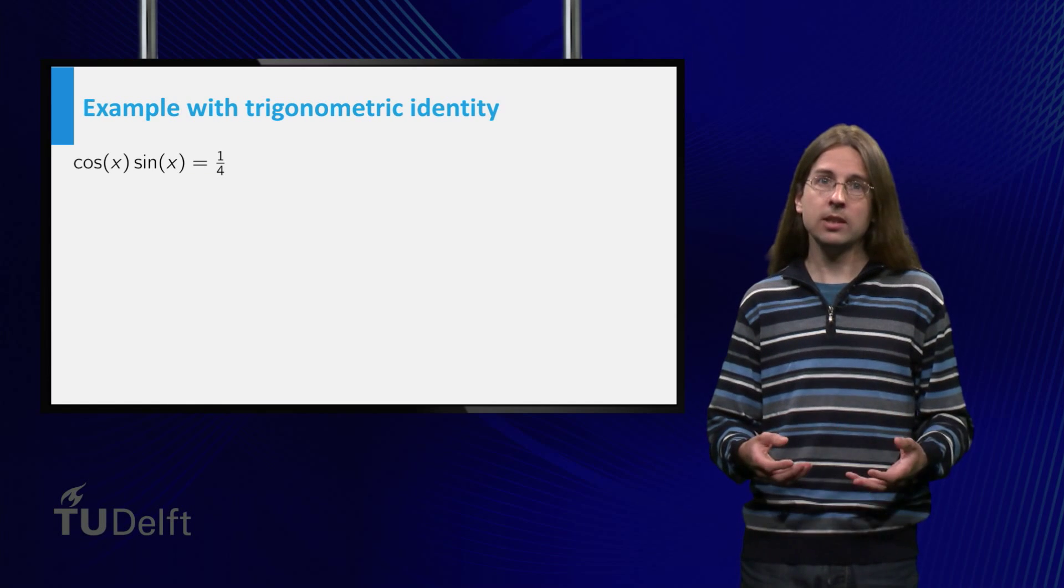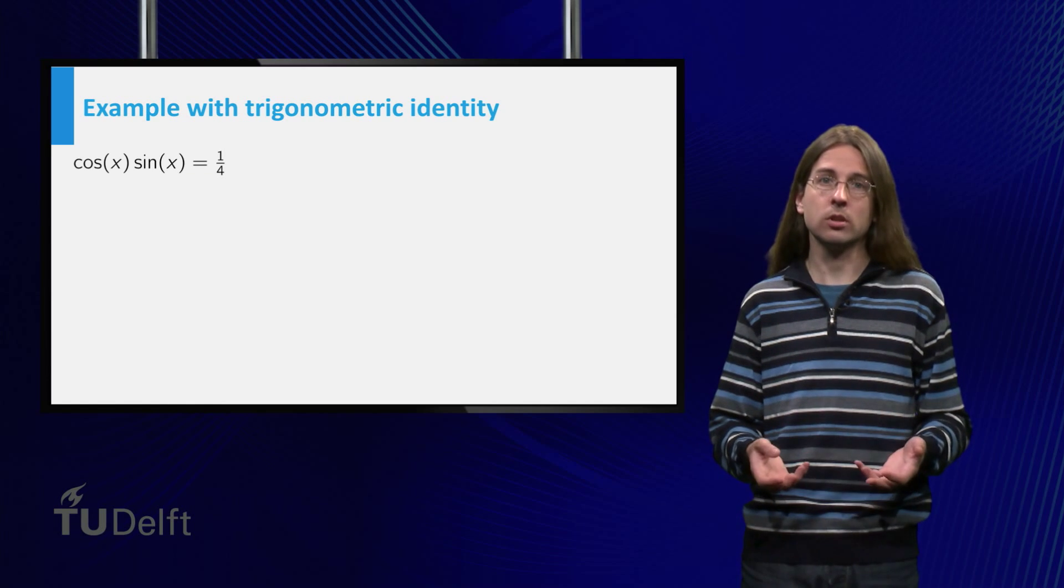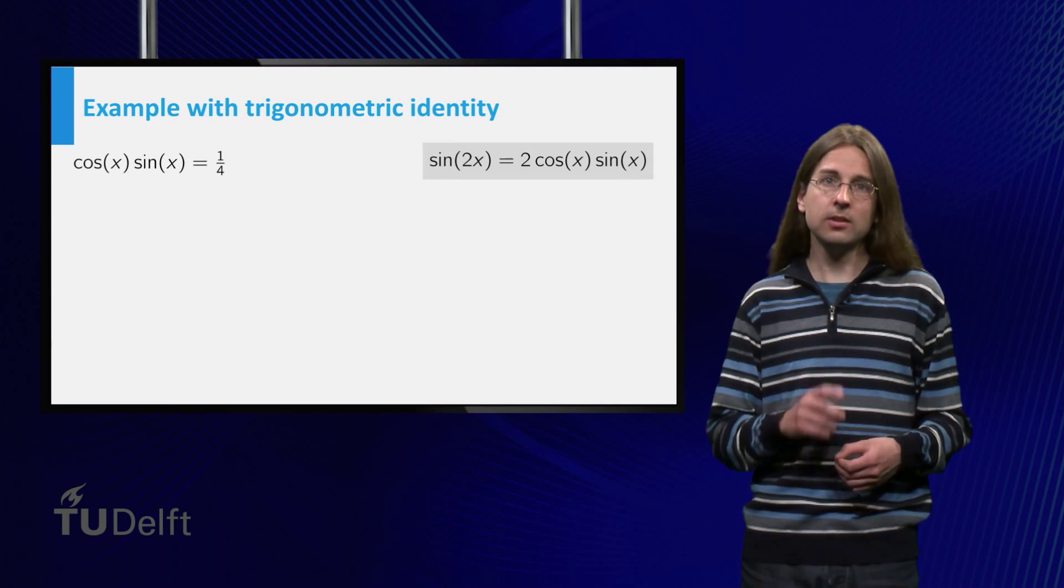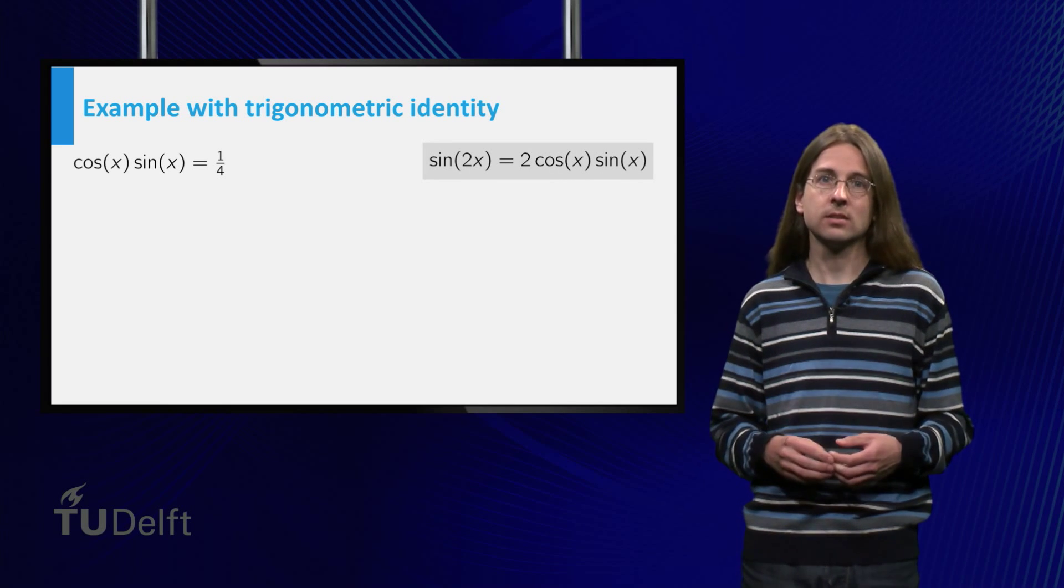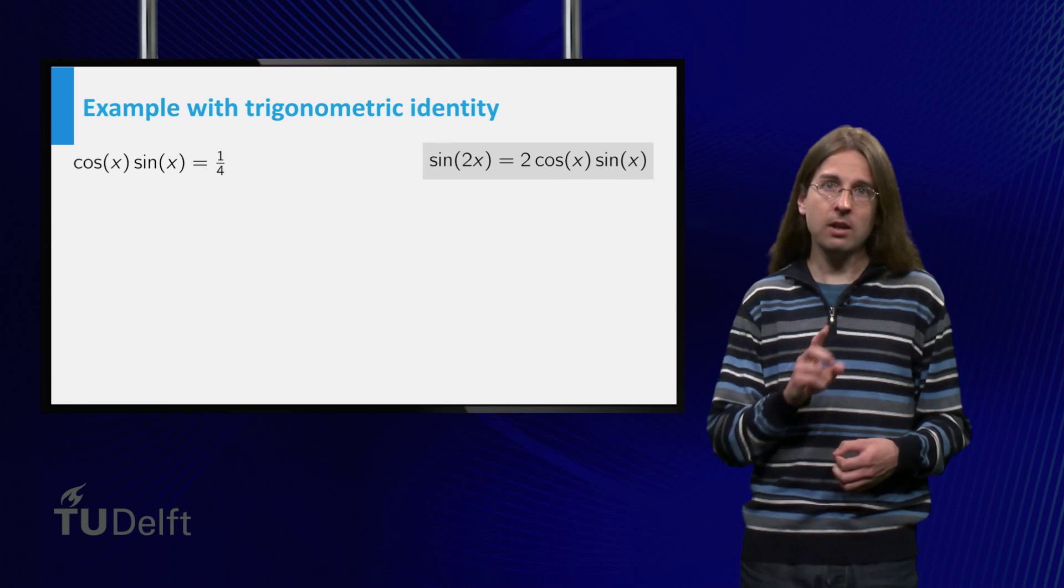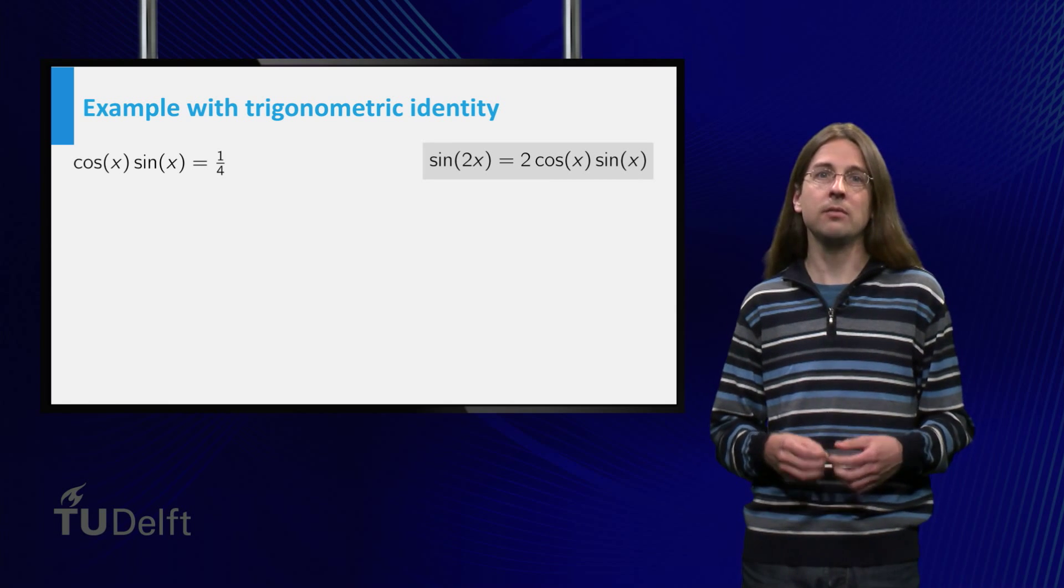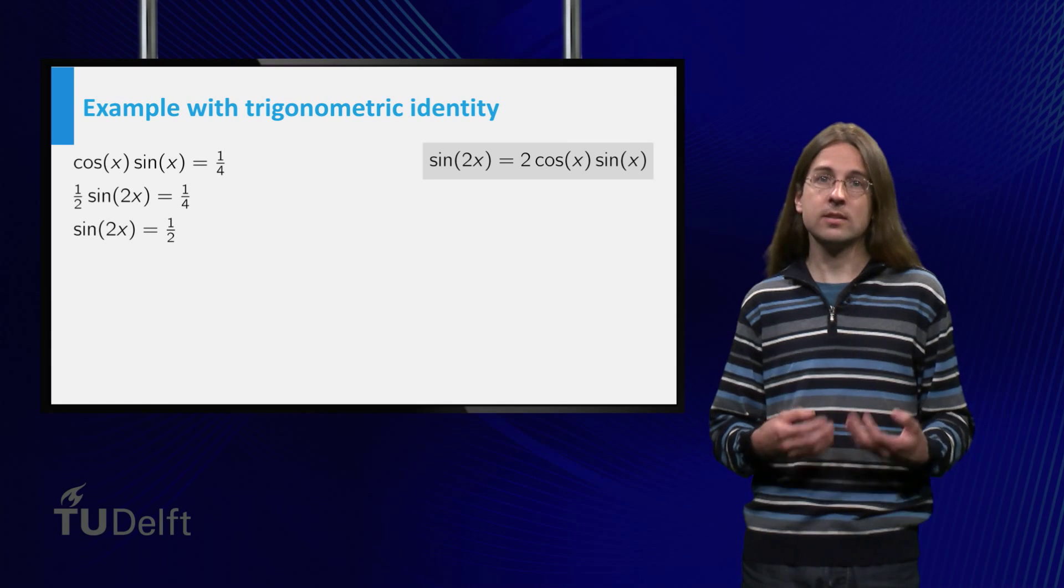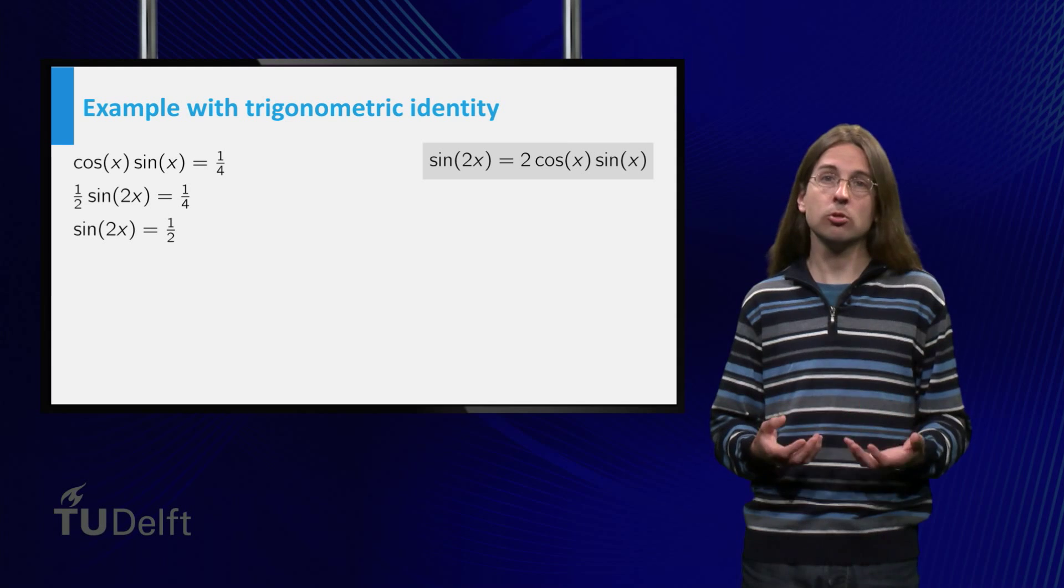Consider the example cos(x)·sin(x) = 1/4. Recall that sin(2x) = 2·cos(x)·sin(x). Thus we recognize the result of the doubling formula for the sine in our equation. Using this, the equation simplifies to sin(2x) = 1/2.